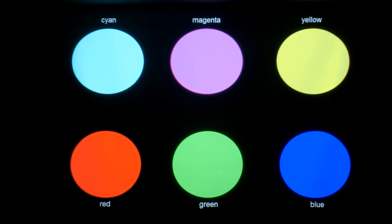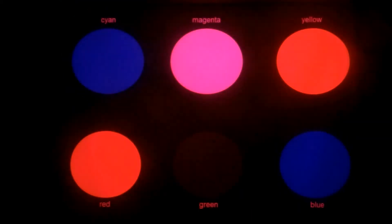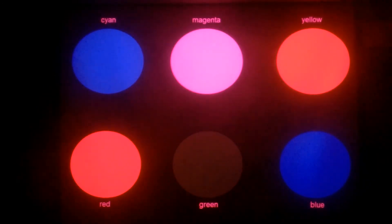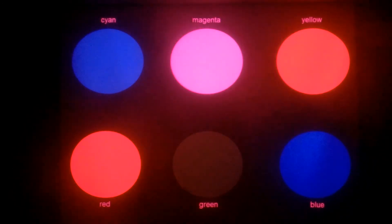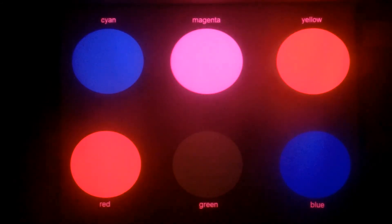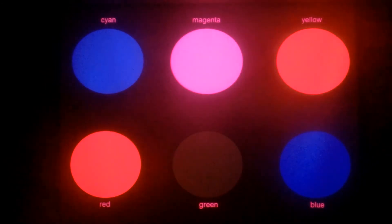A magenta filter will allow both red and blue to pass through. So when I put the magenta filter in front of the camera, the red and the blue pass through. The cyan appears blue, blue appears blue, red and yellow both appear red, magenta appears magenta, and the green is blocked and goes black, or at least almost.